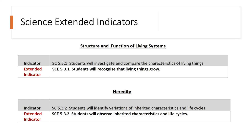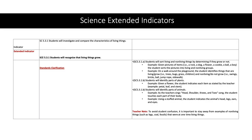There are also extended indicators for science. While fifth grade students in the general curriculum will investigate and compare the characteristics of living things, students with significant cognitive disabilities will recognize that living things grow. In the science extended indicators, there are instructional suggestions to accompany the extended standards.